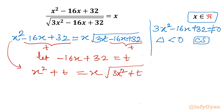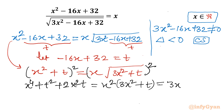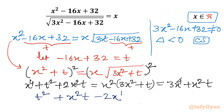Now I will square both sides. The left-hand side using (a+b)² gives x⁴ + t² + 2x²t. The right-hand side gives x² times (3x² + t), which expands to 3x⁴ + x²t. Taking all terms to the left-hand side: t² + x²t - 2x⁴ = 0. This is a quadratic equation in t.